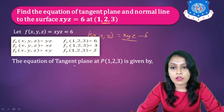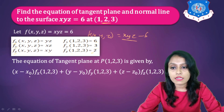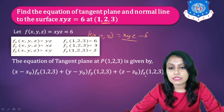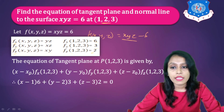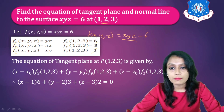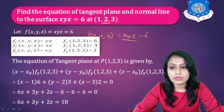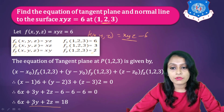The equation of tangent plane is: (x − x₀)·Fx + (y − y₀)·Fy + (z − z₀)·Fz = 0, with (x₀, y₀, z₀) = (1, 2, 3). Substituting: (x − 1)·6 + (y − 2)·3 + (z − 3)·2 = 0. On simplification you get 6x + 3y + 2z = 18.